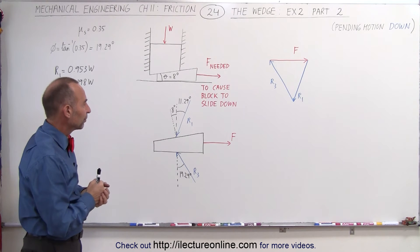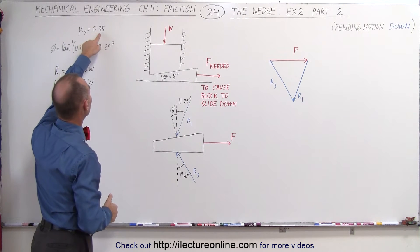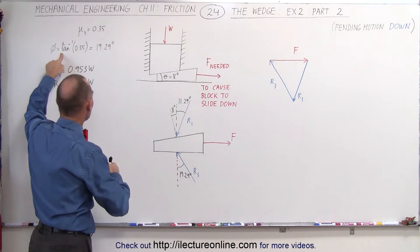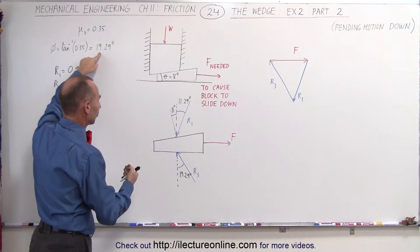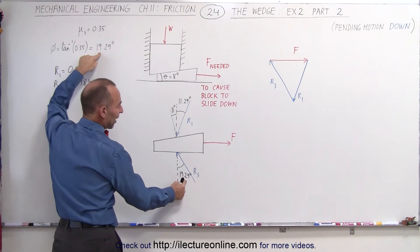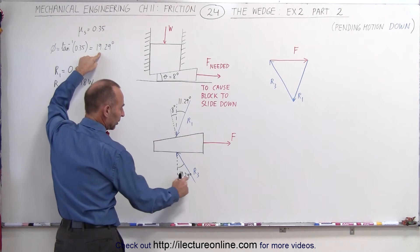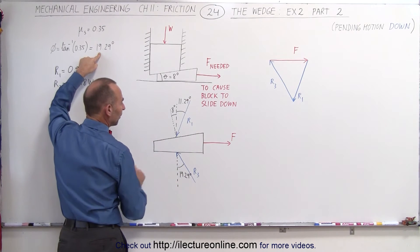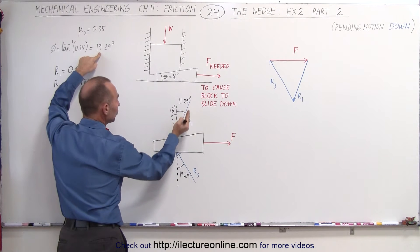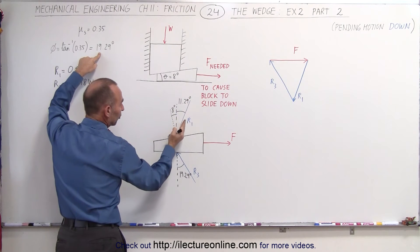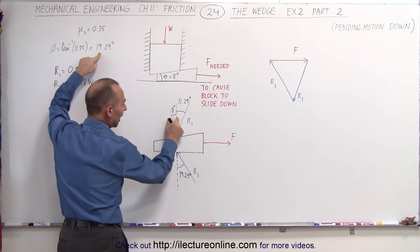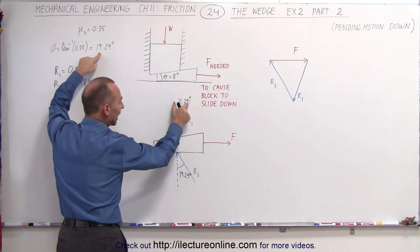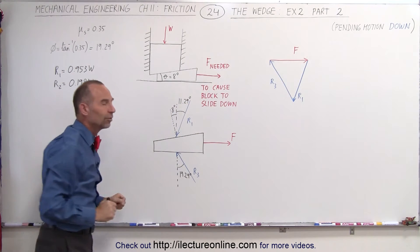How do we find those angles? Since the coefficient of static friction is 0.35, we can find the angle relative to the normal of each of the reactionary forces at 19.29 degrees. The normal is perpendicular, so here we can see the angle between R3 and the normal. Here we have the angle of 19.29 degrees between the reactionary force R1 and the normal, but we have to subtract the 8 degrees because it's at a slant, so the angle with the vertical is only 11.29 degrees there.